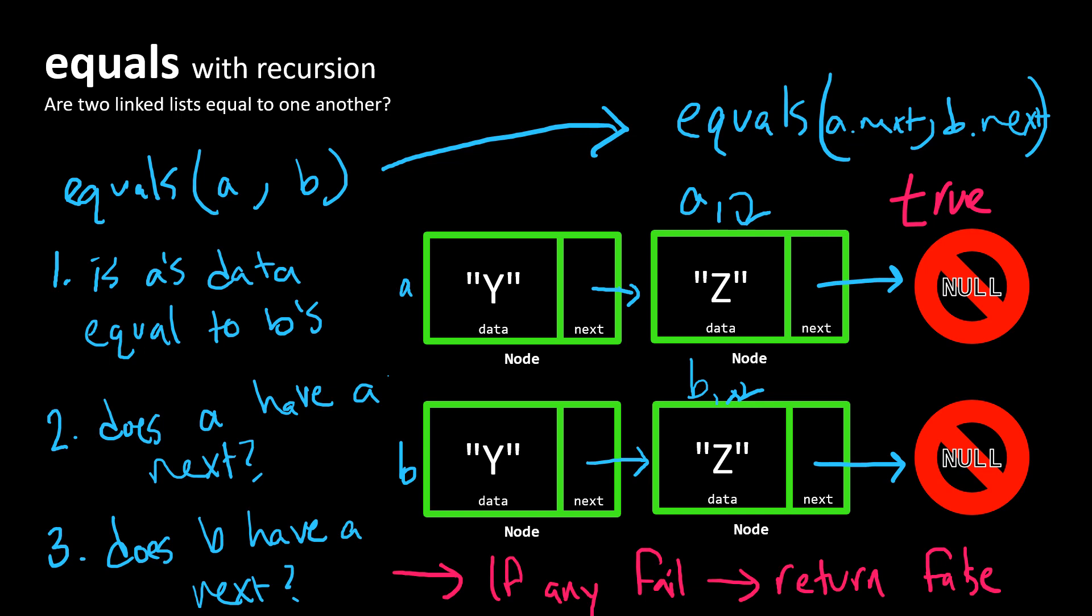The key thing to think about recursively is that at each step of our recursion, in our recursive cases, we're going to consider: are the two nodes we're currently looking at equal?